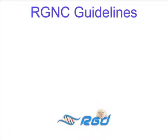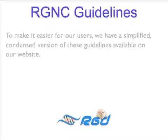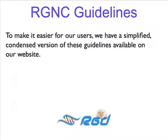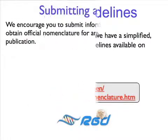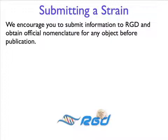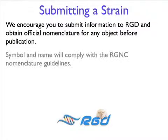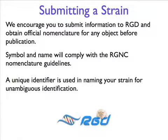We know that the guidelines provided by the RGNC is a long document, so to make it easier for our users, we have a simplified, condensed version of the guidelines available on our website at rgd.mcw.edu. We encourage our users to submit their data for strains, gene variants, QTLs, and SSLPs to RGD. When you submit directly to RGD, our curators make sure the symbol and name comply with the RGNC nomenclature guidelines and that the current ILR codes are used. We register these strains in RGD and assign a unique RGD identifier to it.